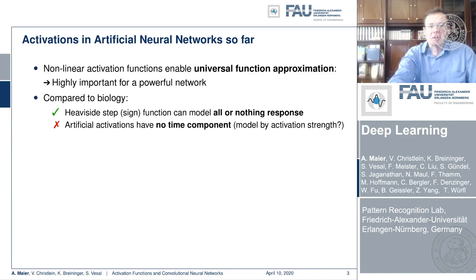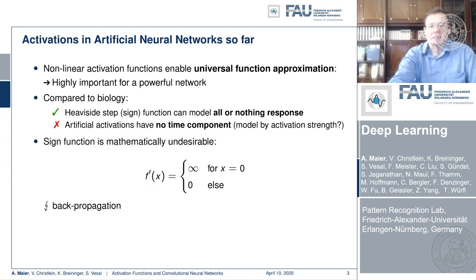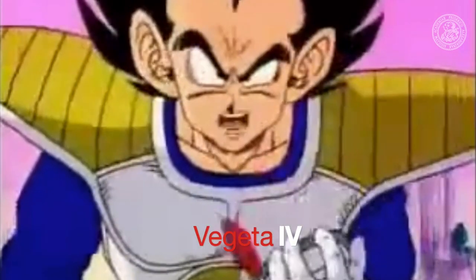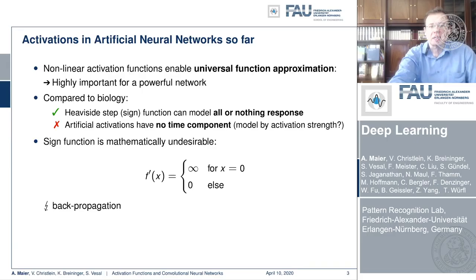Compared to biology, we have a sign function that can model an all-or-nothing response, but generally our activations have no time component — and maybe this could be modeled by activation strength. The sign function is mathematically undesirable because the derivative of the sign function is zero everywhere except at zero, where we have infinity. So this is absolutely not suited for backpropagation.